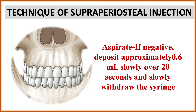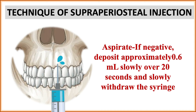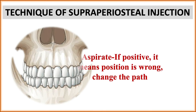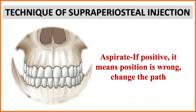Aspirate the needle — this is a very important step. If the aspirate is negative (meaning no blood in the needle during aspiration), deposit approximately 0.6 ml of anesthetic solution over 20 seconds and slowly withdraw the syringe. If the aspirate is positive, it means the needle has entered a blood vessel, so withdraw the needle and change the path until you achieve a negative aspirate.